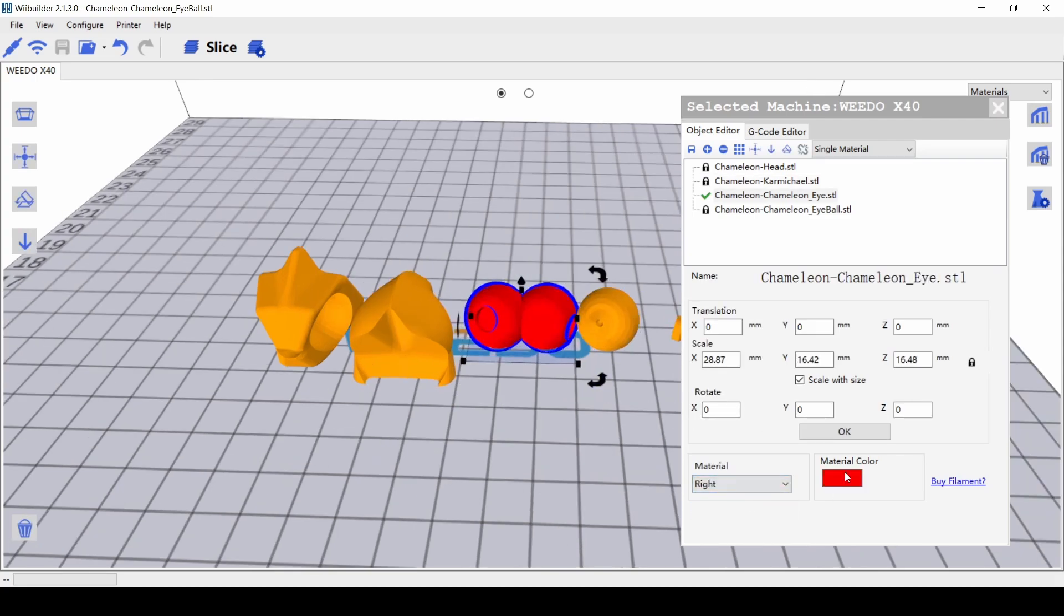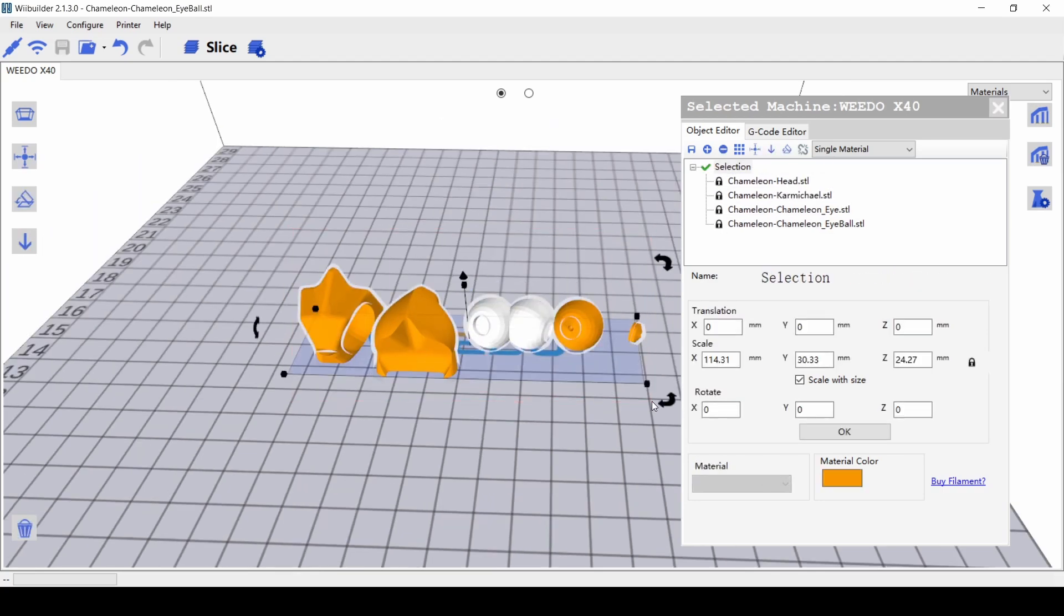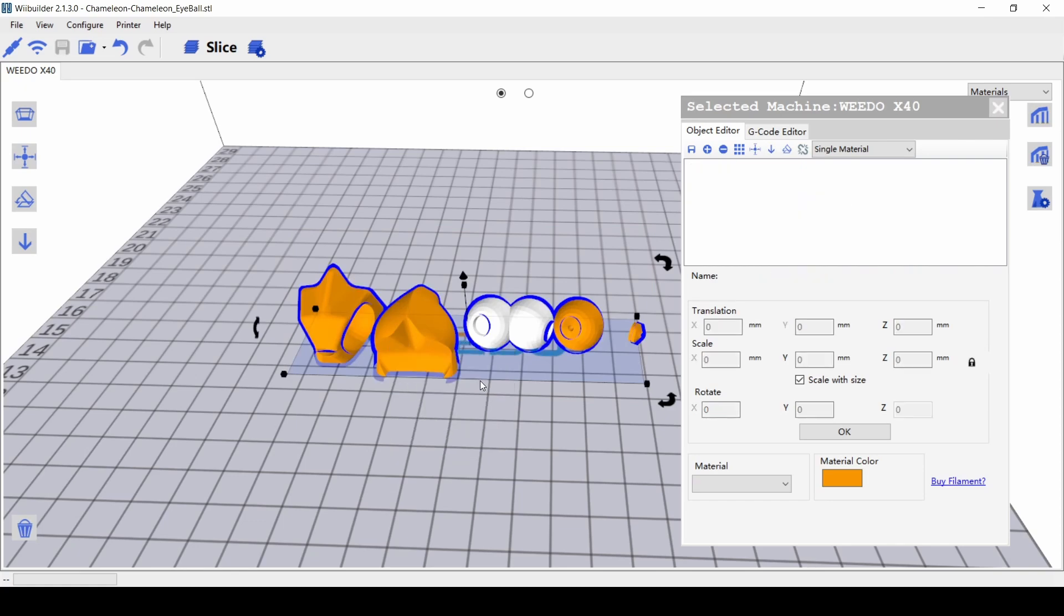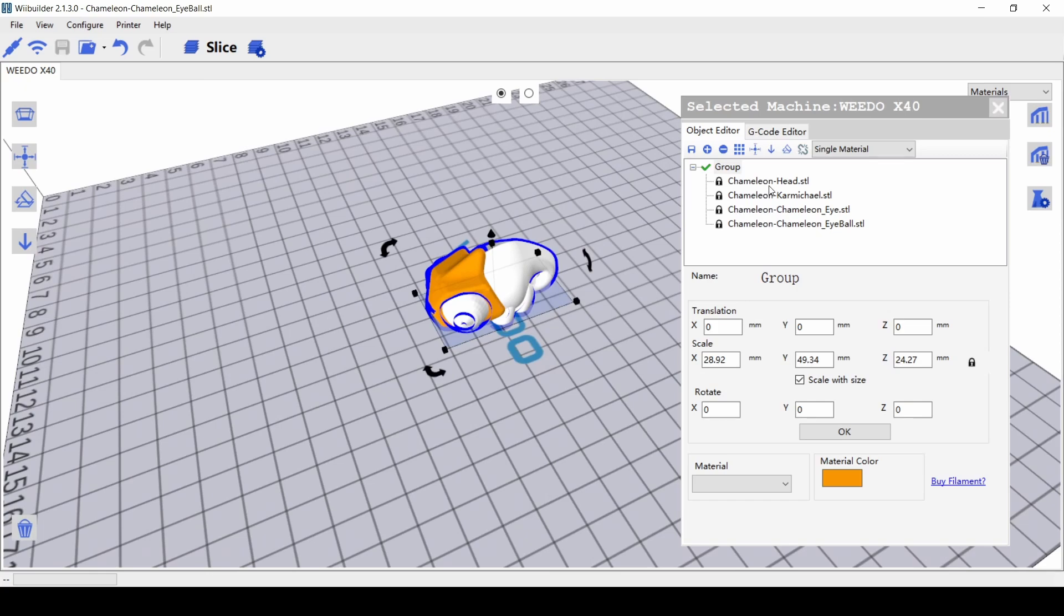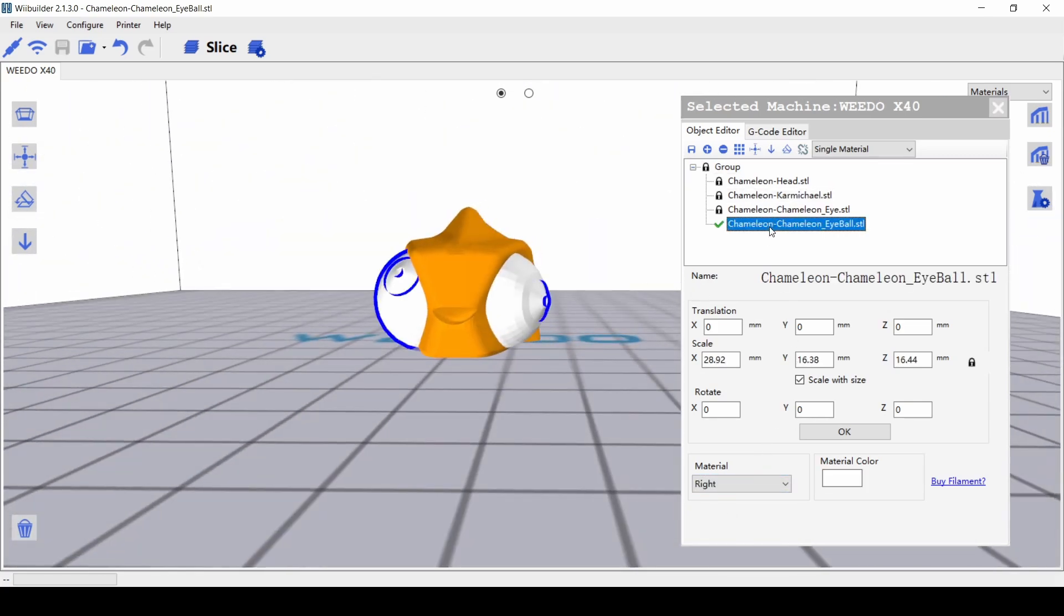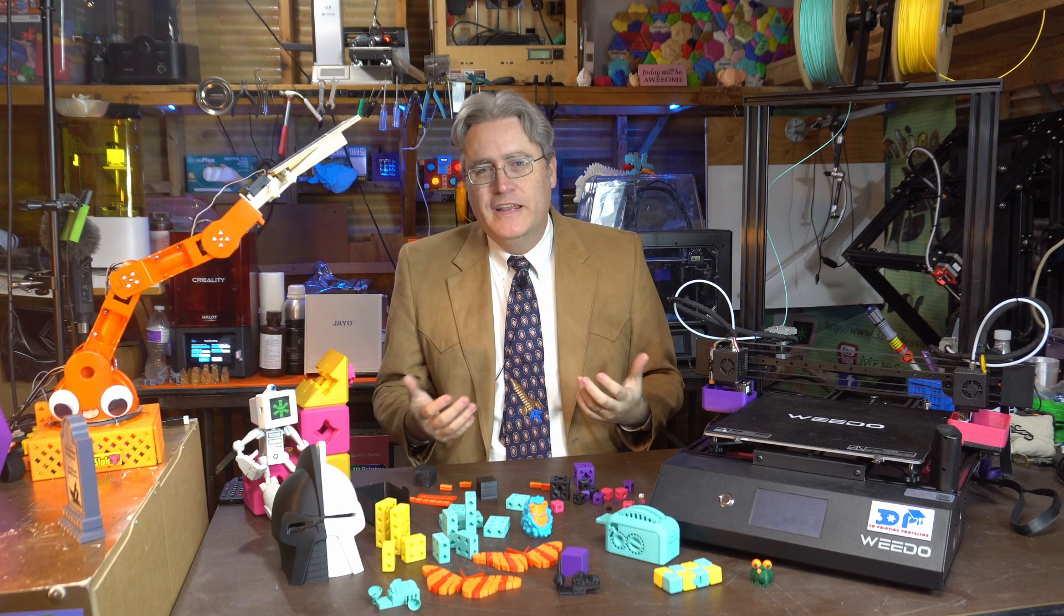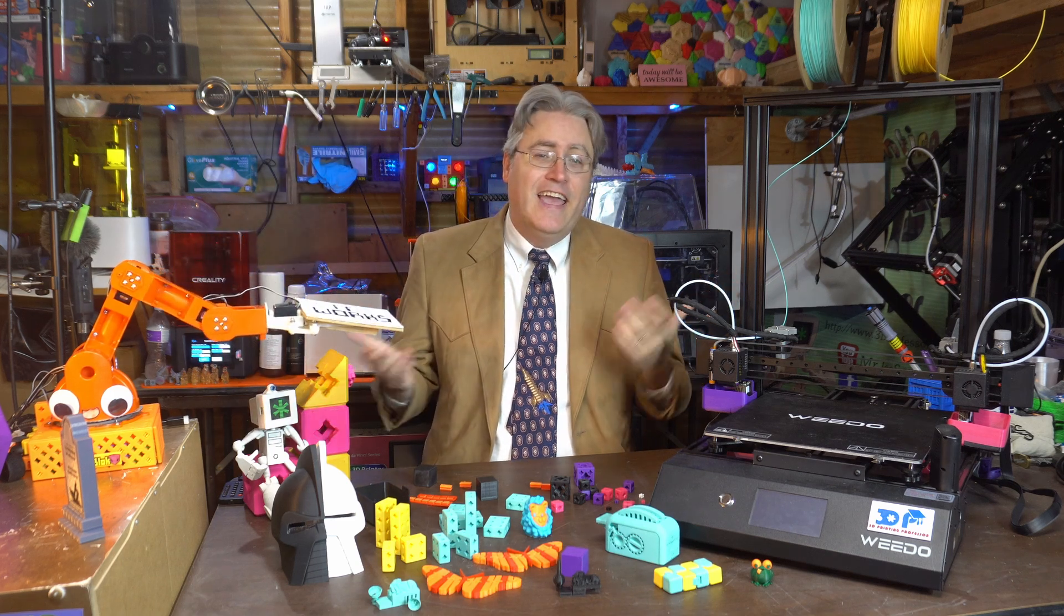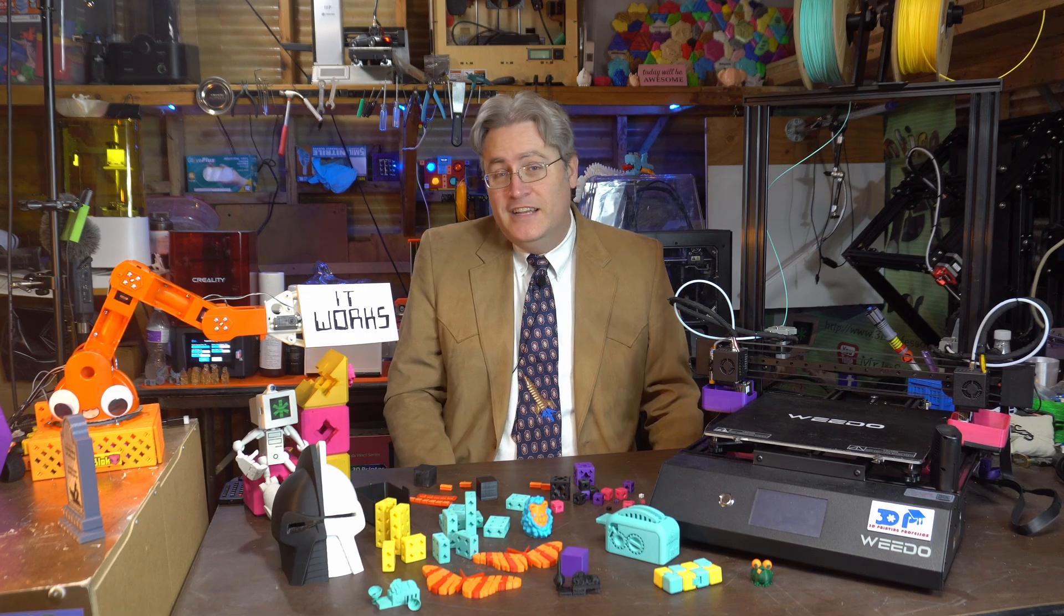But there's also something to be said for good software design, which puts the things that you want to do where you can find them. That usually means putting it in three different places, because people are going to look for it in different places, but not so with WeBuilder. With WeBuilder, you've got to figure out how to do it their way, and it's a little bit frustrating, but in the end, I have to admit, yeah, you're right, Tony. It does work.